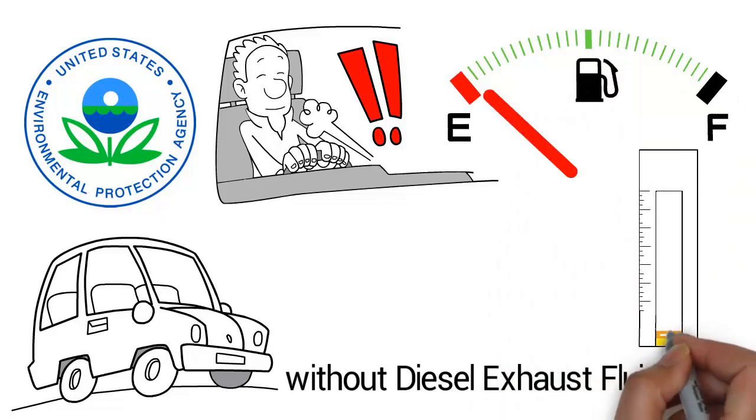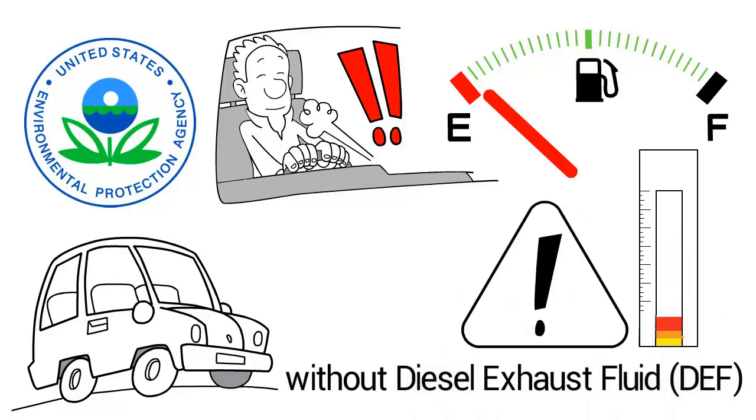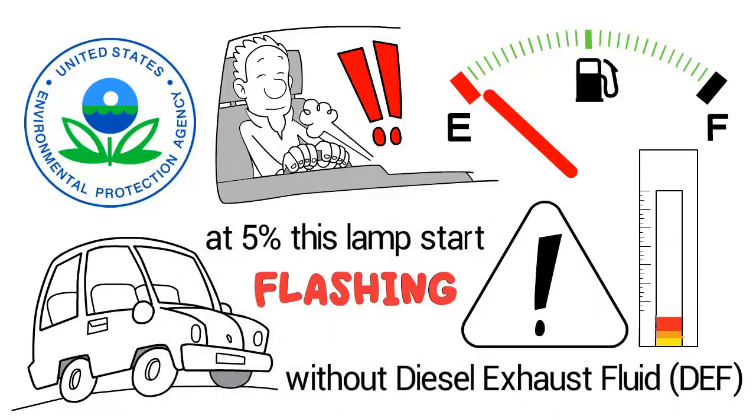Generally speaking, when the DEF tank level drops below 10 percent, an amber warning lamp will come on. At 5 percent, this lamp starts flashing, and below 2.5 percent, a solid amber warning light is displayed.